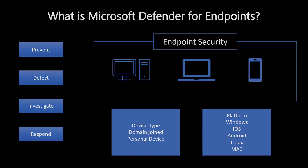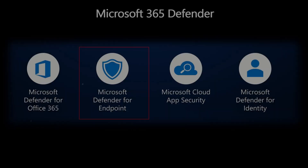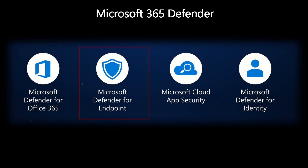Let's talk about where Microsoft Defender for Endpoints is placed in the M365 Defender suite. There are four products in this suite. The first is Microsoft Defender for Office 365, which protects and secures email. Similarly, for endpoints we have Microsoft Defender for Endpoints. For applications, it's MCAS. And for identities, it's Microsoft Defender for Identity. These are the four products in the M365 Defender suite altogether.